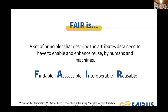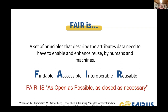FAIR is a set of principles that describe the attributes data needs to have to enable and enhance reuse by humans and machines. The acronym for FAIR is Findable, Accessible, Interoperable and Reusable. It originates from a 2014 Lawrence workshop, resulting in 15 guiding principles published in 2016. Openness in FAIR has a nuance: FAIR data is as open as possible, as closed as necessary.